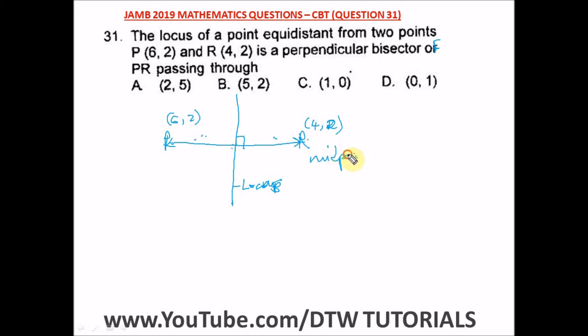Remember, what's the formula for finding the midpoint of a line? The midpoint of a line is x1 plus x2 divided by 2, comma y1 plus y2 divided by 2. So from here this is x1, y1, x2, y2.